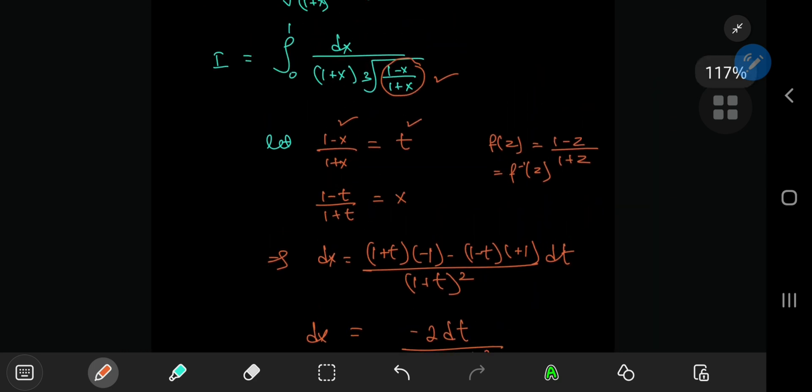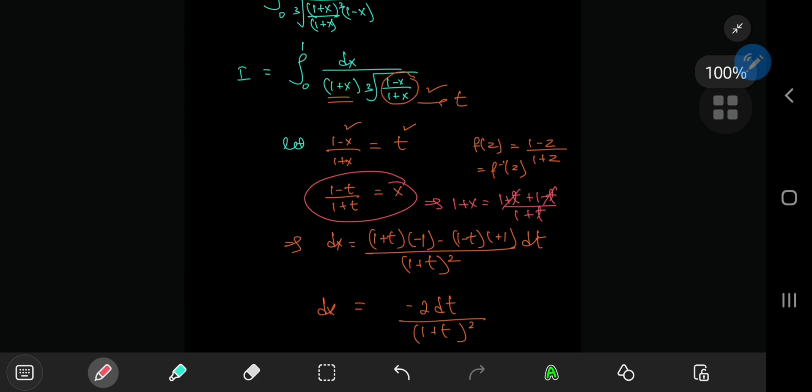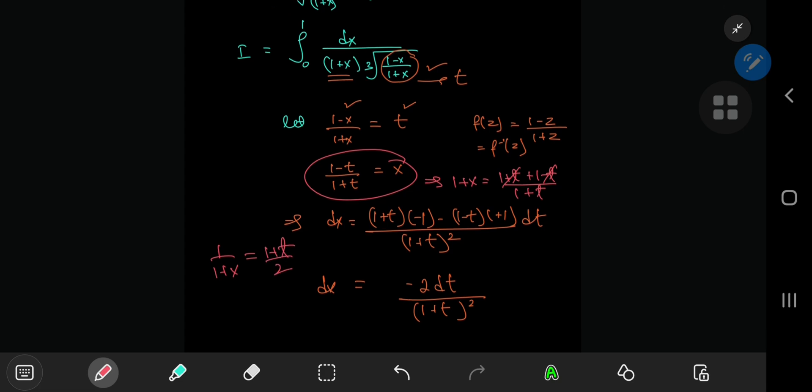This thing here is t. And what about 1 plus x? This implies that 1 plus x equals 1 plus t plus 1 minus t divided by 1 plus t. The t's cancel out quite nicely, so you're left with 2 divided by 1 plus t, and the reciprocal of 1 plus x will be 1 plus t divided by 2.